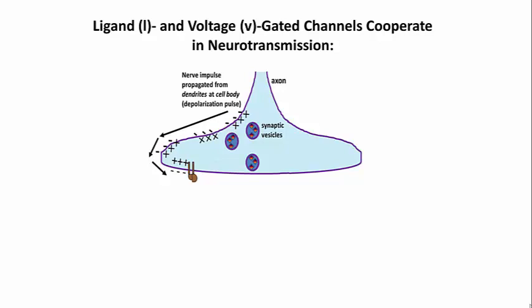It's a voltage-gated calcium channel that opens up in response to that electrical jolt propagated down the axon. The calcium enters the cell, interacts with synaptic vesicles, causing them exocytotically to fuse with the membrane of the nerve ending.